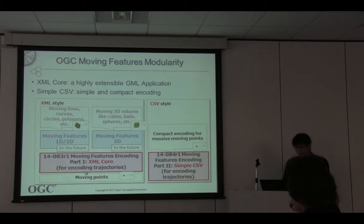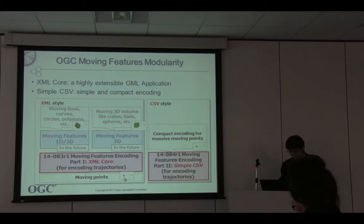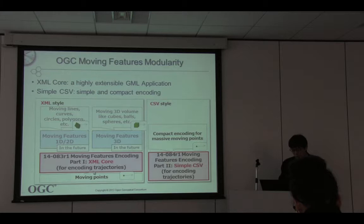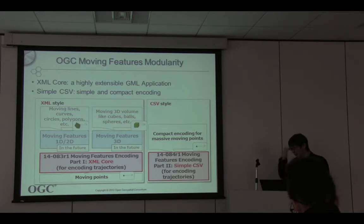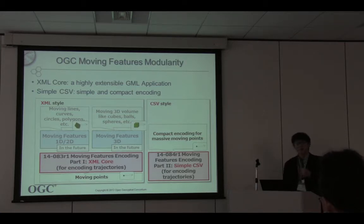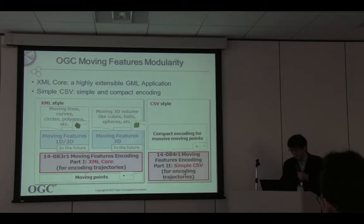There are many feature types — 3D, 2D, 1D — but at this moment we just focus on moving points, just the 0D features, because many moving features are represented by just moving points. So the moving point features use the XML core. The number of such moving features is in many cases very large — for example, the data comes from 6 million unique IDs. We have to exchange a very huge amount of data. So simple encoding such as simple CSV may help. That is the reason why we provide Part Two.